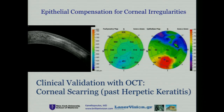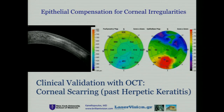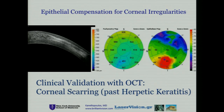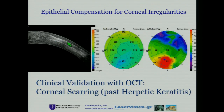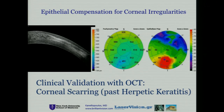Here I have an example of clinical validation with OCT. There's a patient with corneal scarring, and as you can see, there is an epithelial compensation — the epithelium masks all the abnormalities of the cornea.